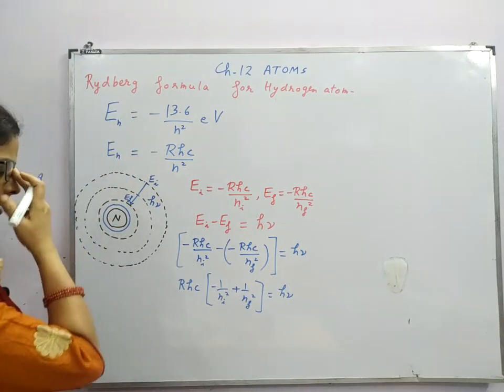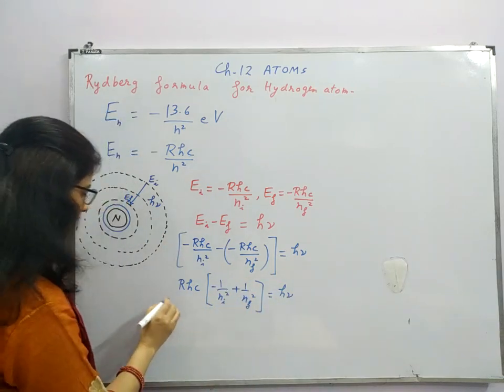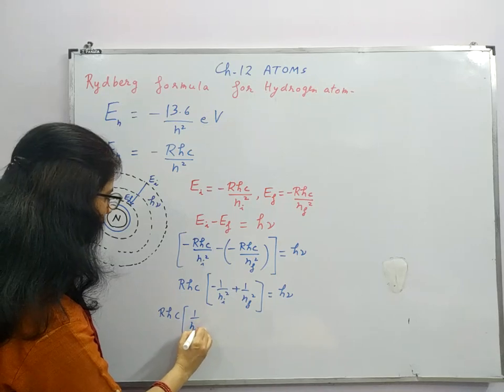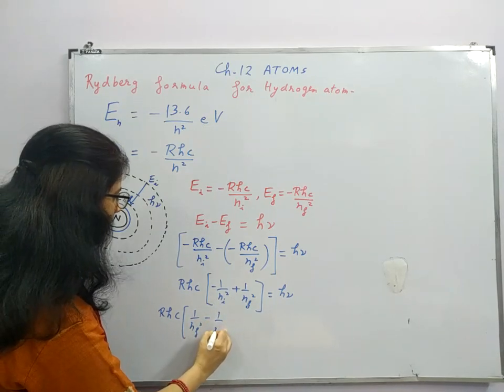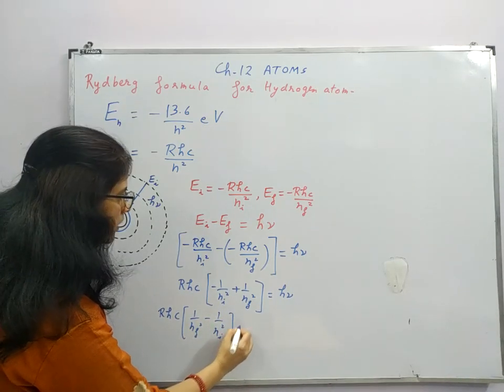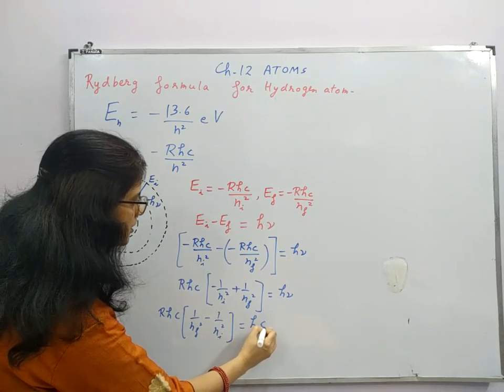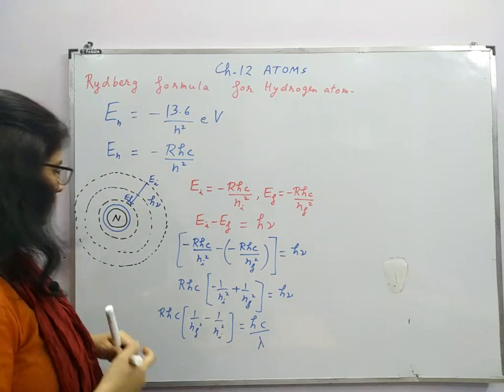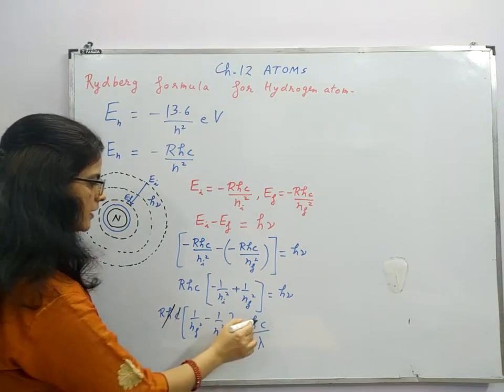If I put the value of nu on right side, I can write 1 by n_f square minus 1 by n_i square equals h c upon lambda. Now in this formula, this can be cancelled.